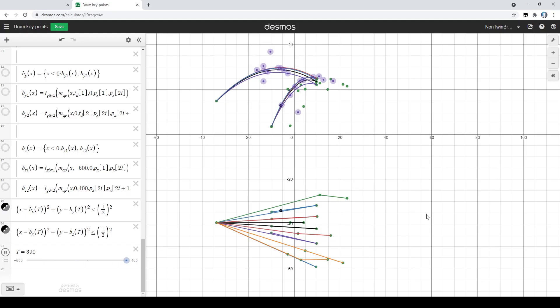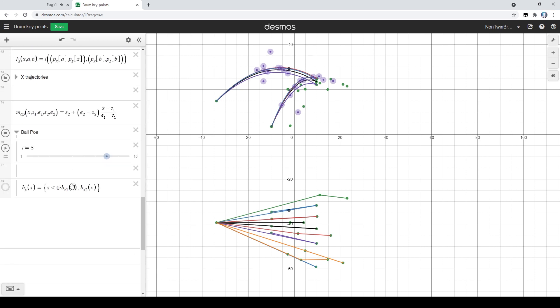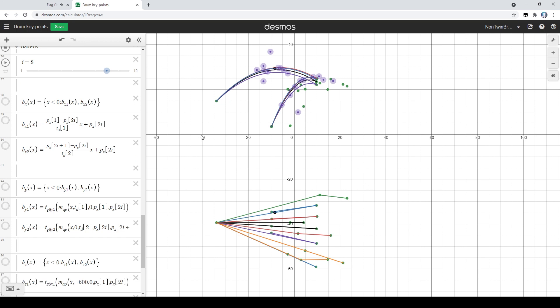Here's the Desmos graph for the marble trajectories, and as you can see, it's really involved. If I were to show all of them at once, it would just be a mess, but you can see how all of them play out.